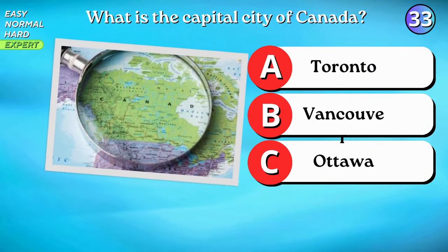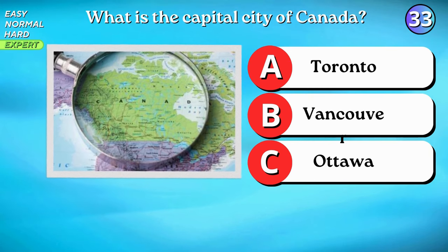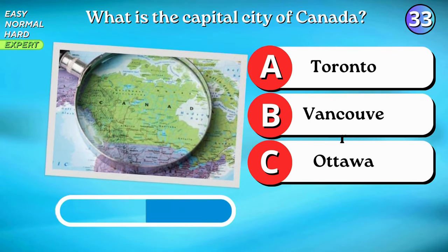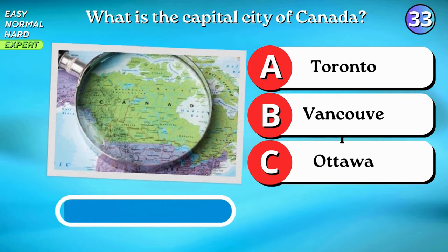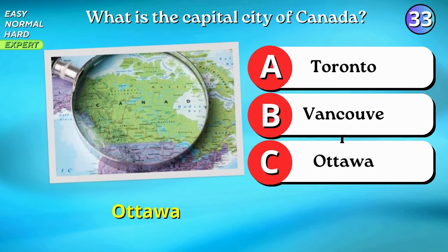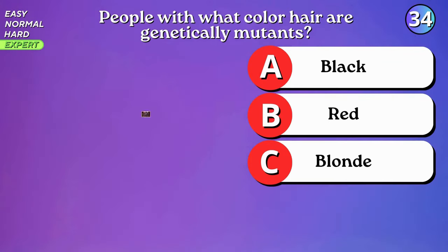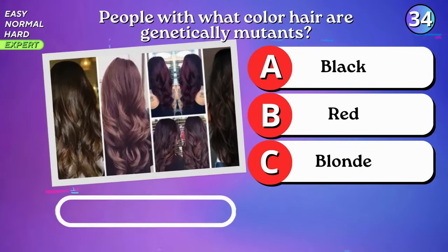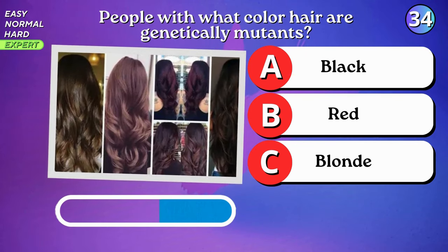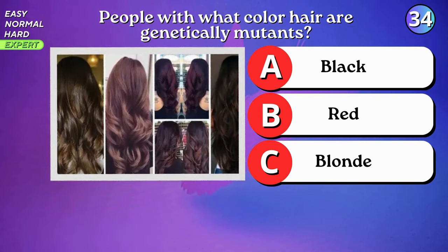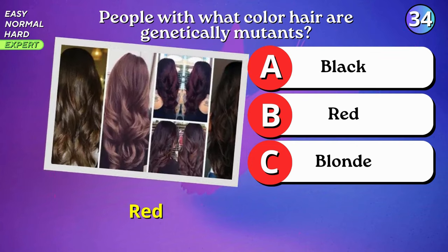What is the capital city of Canada? Ottawa. People with what color hair are genetically mutants? Red.